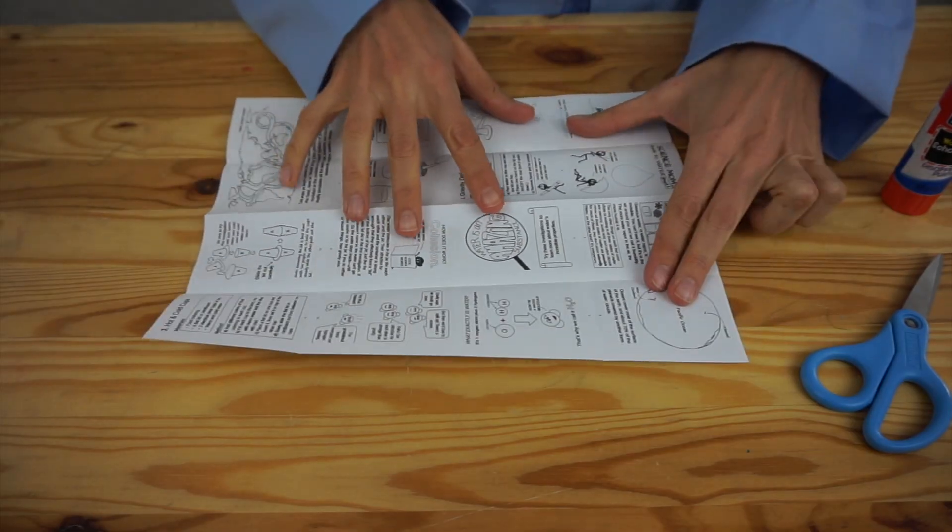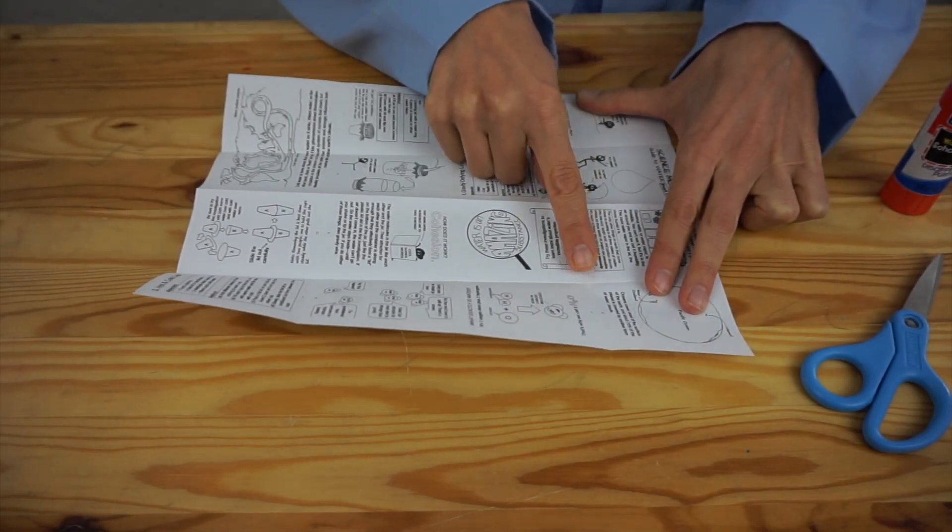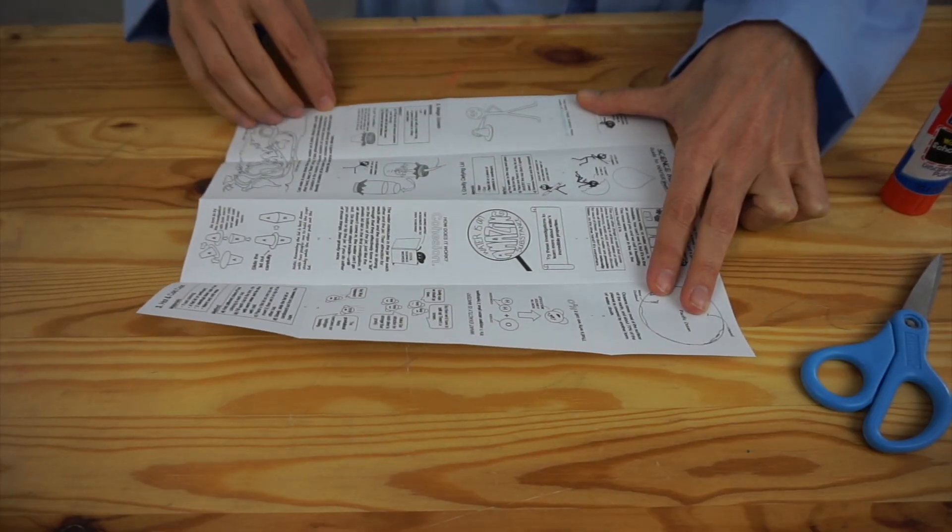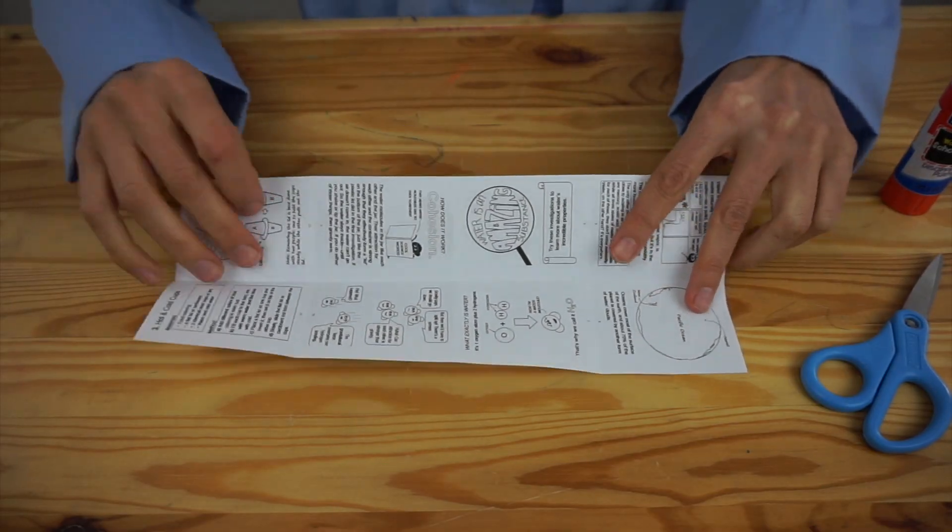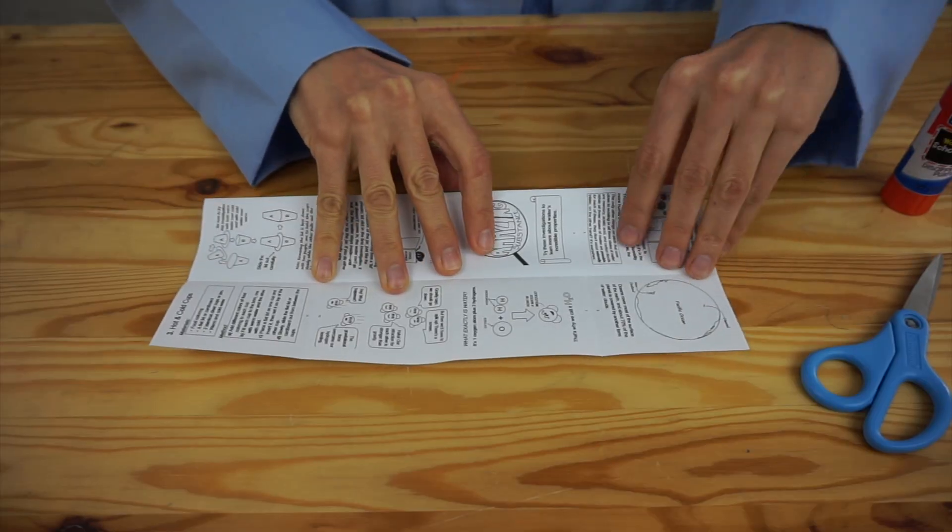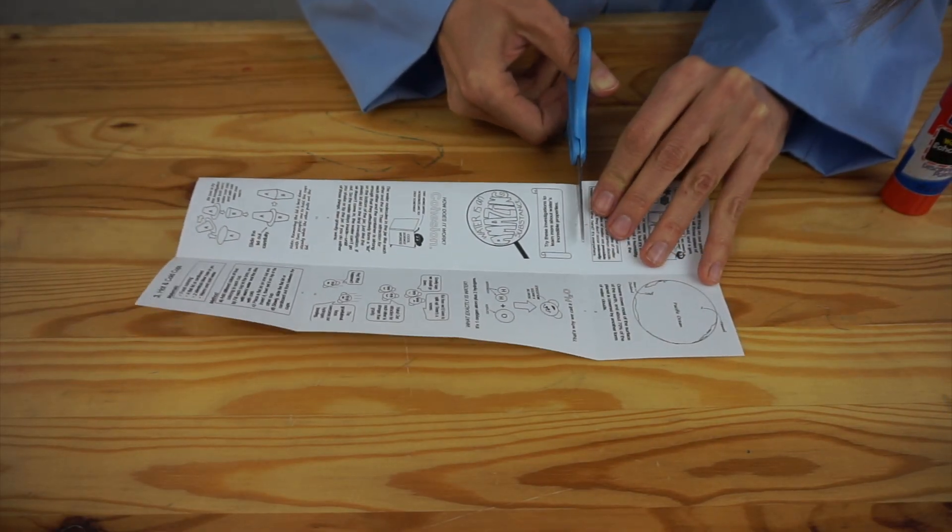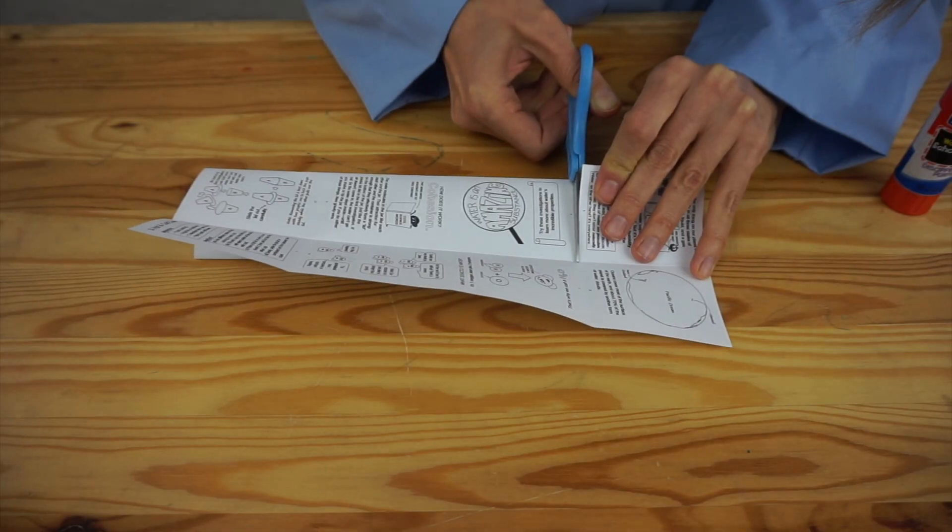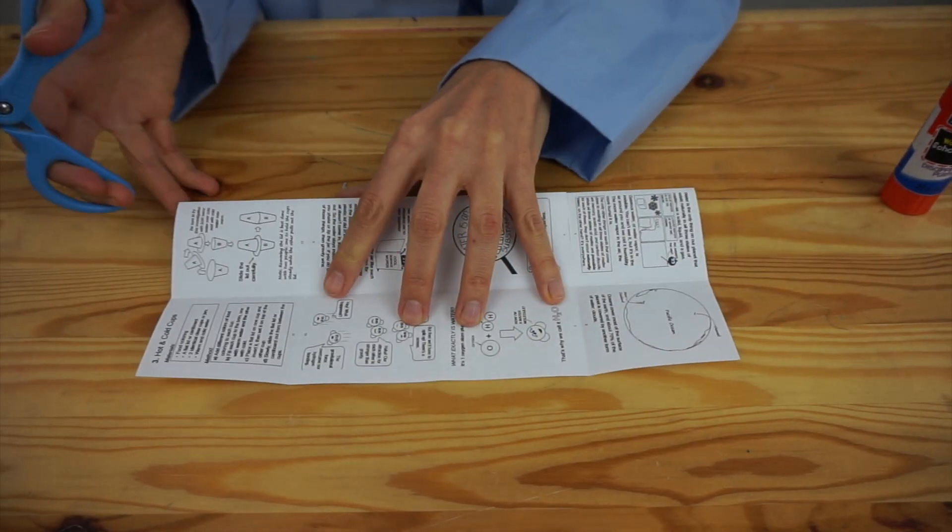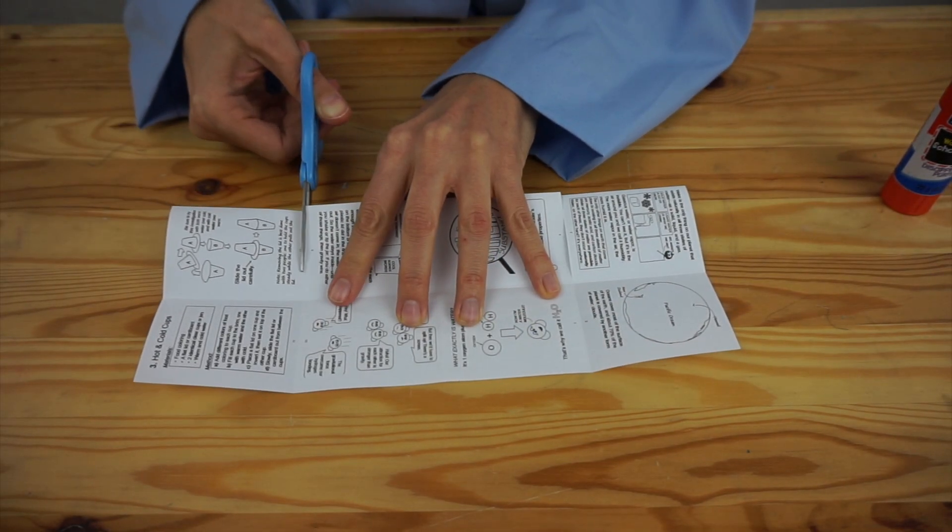Now get your scissors ready because we're going to make cuts here and here and here. It's easiest to cut if you fold up the three parts, and then you just need to make one cut along the crease. And I like to make the two on the left side first,